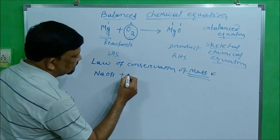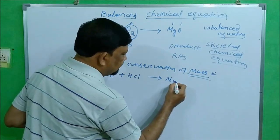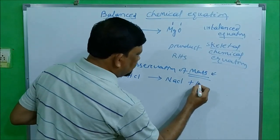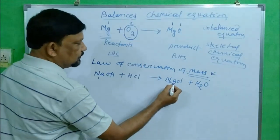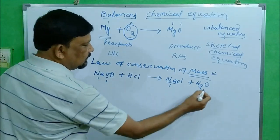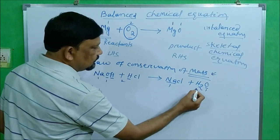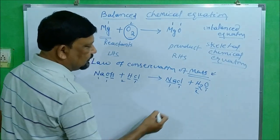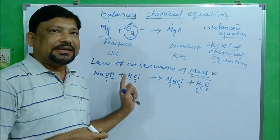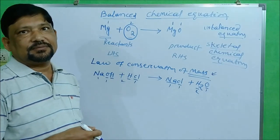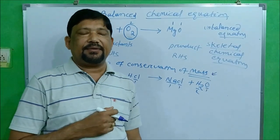Let's take another example: sodium hydroxide combines with hydrochloric acid to give sodium chloride plus water. Counting atoms: sodium 1 = sodium 1, oxygen 1 = oxygen 1, hydrogen 1+1=2 = hydrogen 2, chlorine 1 = chlorine 1. On both sides the number of atoms of each element are equal, so this is a balanced equation.